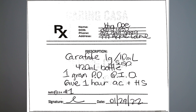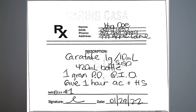The next medication is Carafate, dispensed as one gram per 10 mLs in suspension form. The bottle will be about 420 mLs. The provider wrote a SIG for one gram PO QID — four times daily — one hour AC (before meals) and HS (at bedtime). Number of refills is one; signature and date are provided.